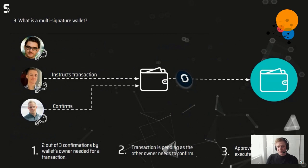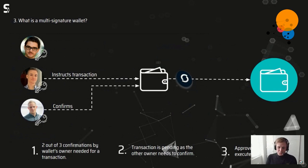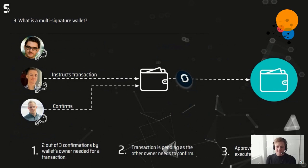Multi-signature wallets help here. You can see three people — myself, Aaron, and a random guy from the internet. All of them get their own private key; we're not sharing the same key. For example, Aaron wants to do a transaction for the company. We've defined that we need two-of-three confirmations, so either the random guy or I also have to confirm. As long as no second person confirms, the transaction is pending. I trust Aaron, so I confirm it, and then the transaction is approved and executed.